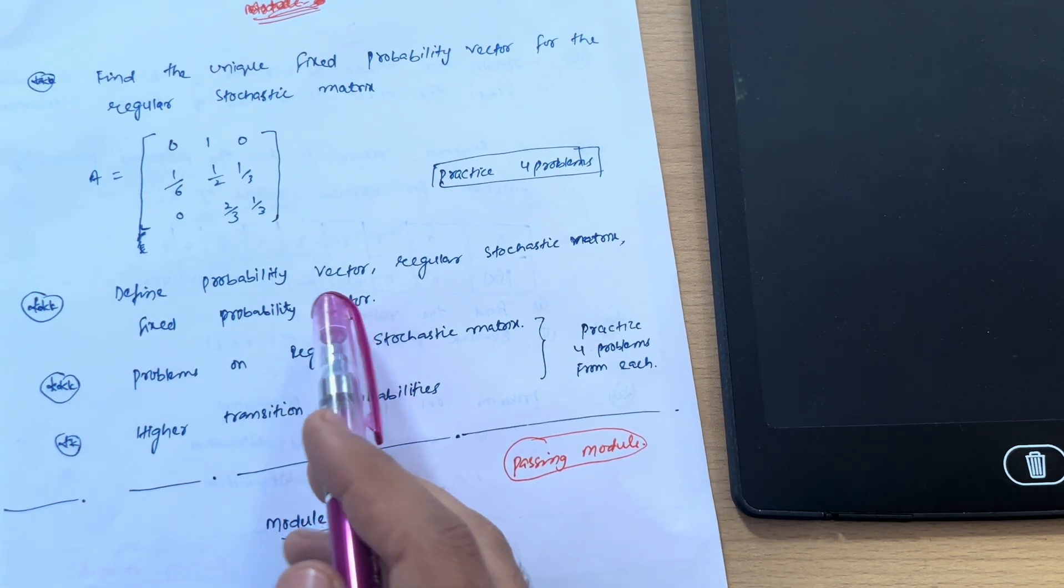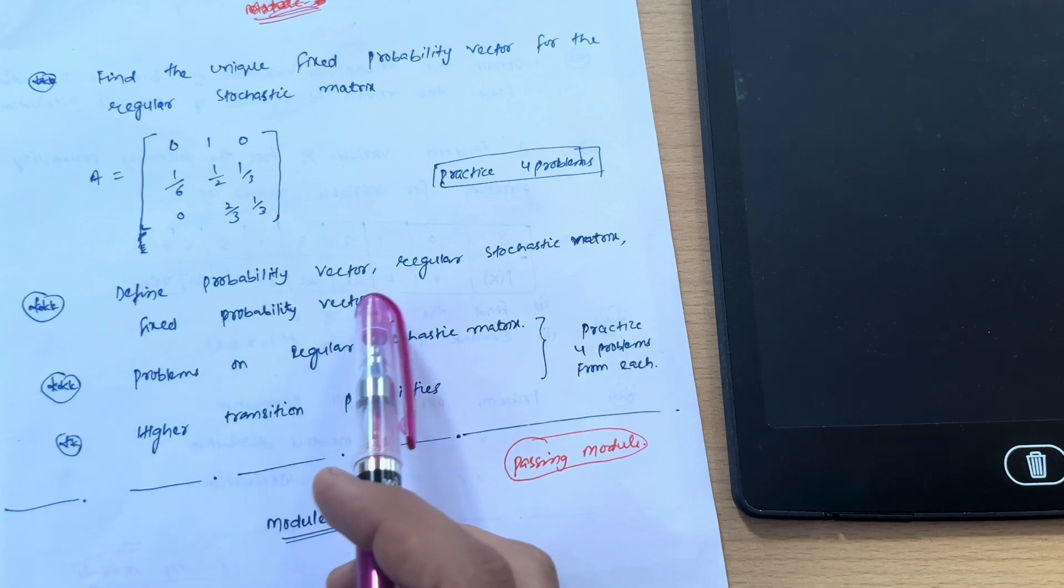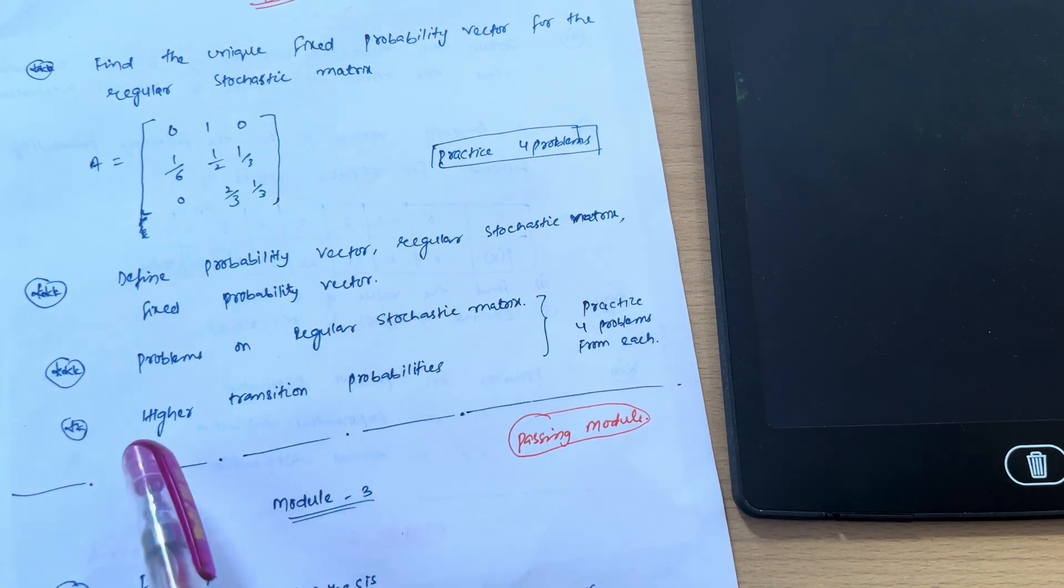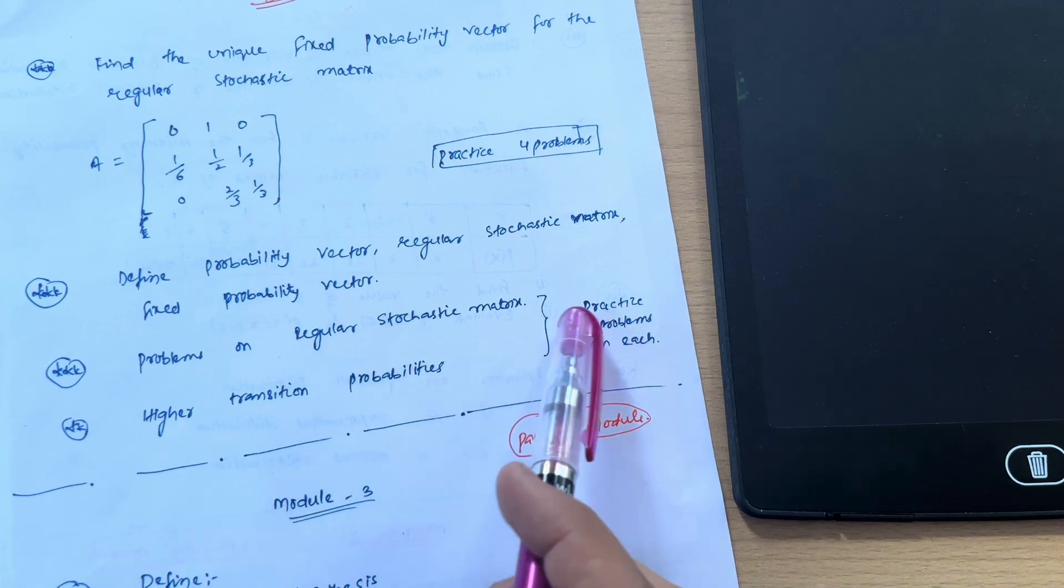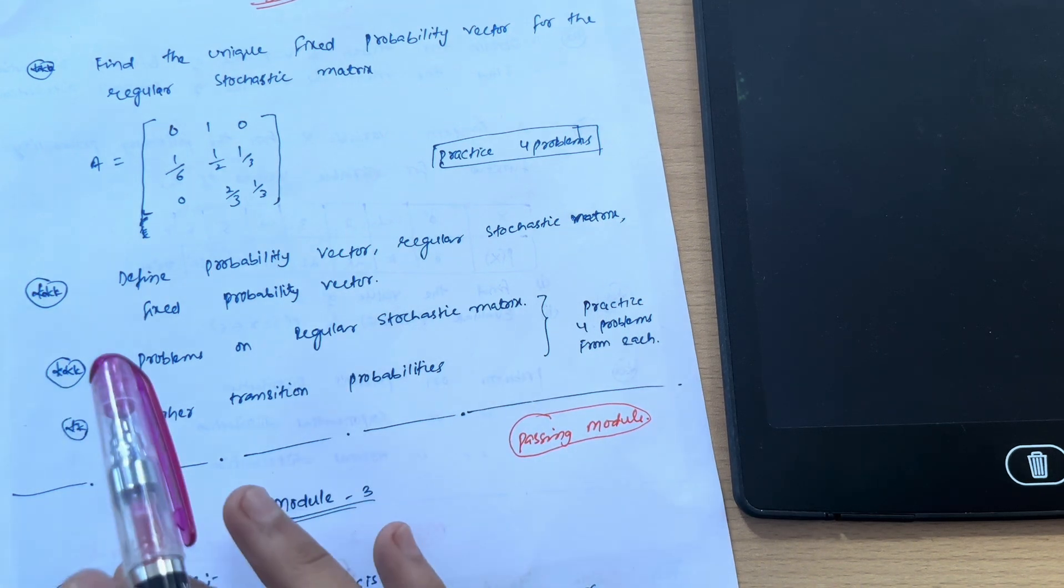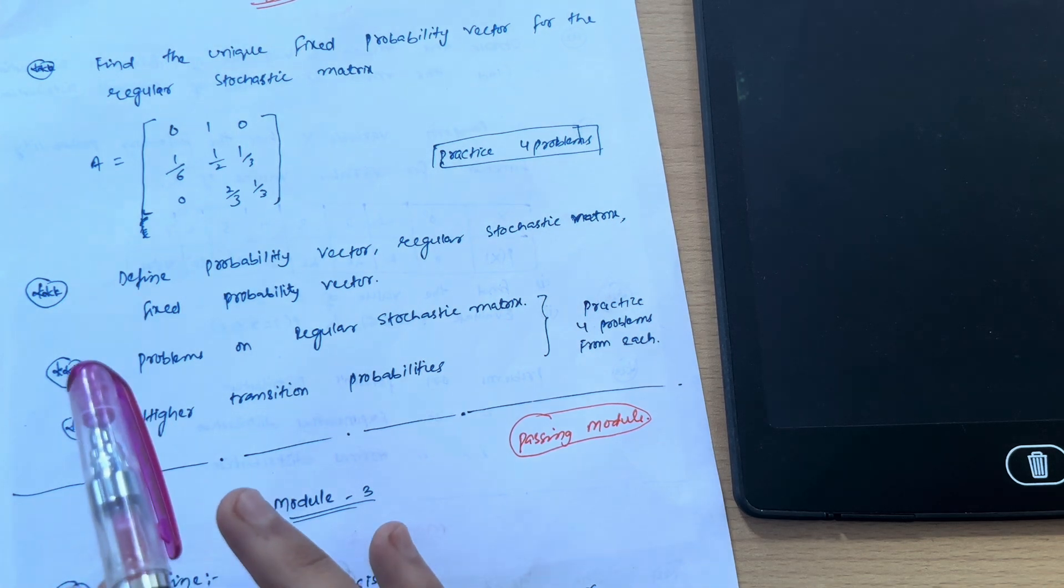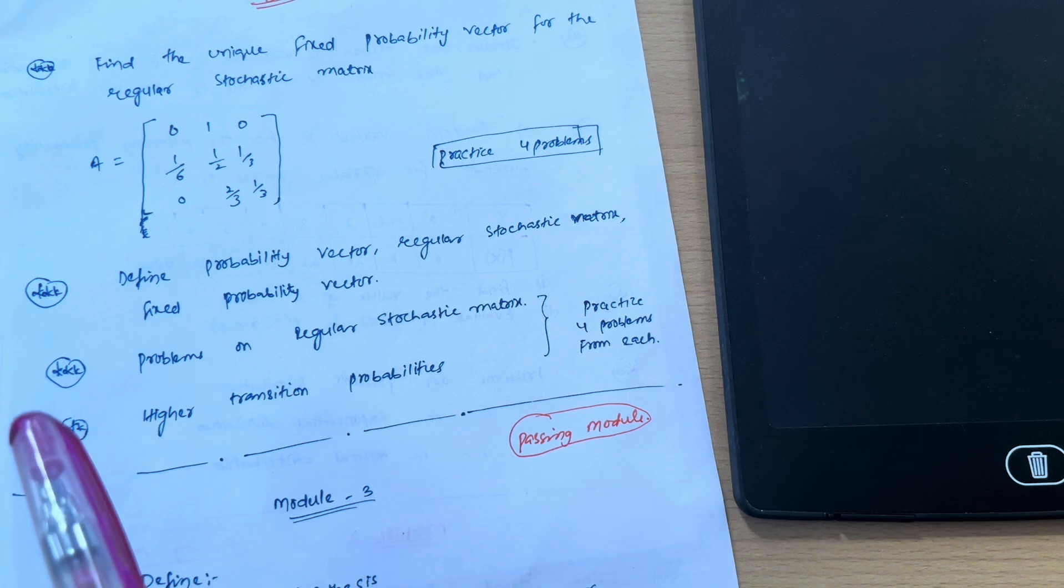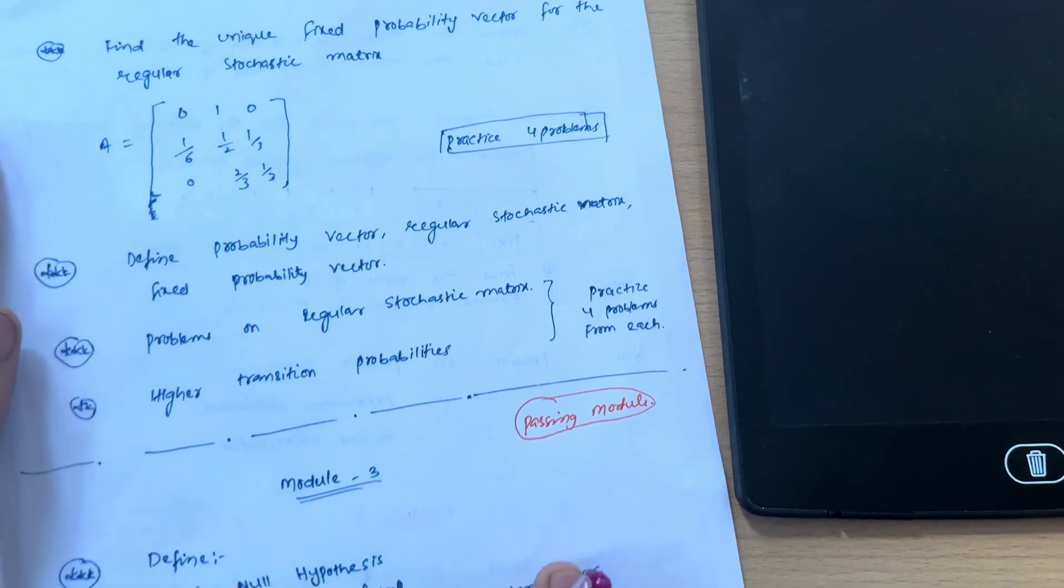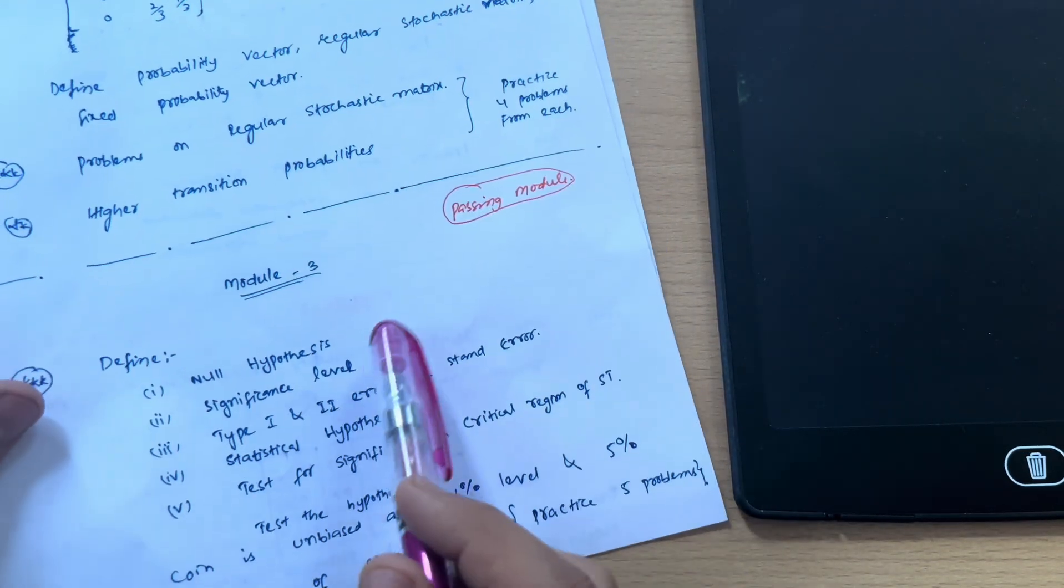Next is define probability vector—it is the definition part: regular stochastic matrix, fixed probability vector, and problems on regular stochastic matrix and higher transition probabilities. Practice four problems from each concept, and playlists are already ready on my YouTube channel. You can go through—I have solved all the model question paper questions, so you can get concepts regarding this particular Module 2.